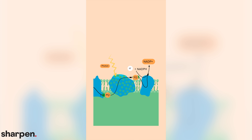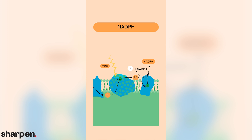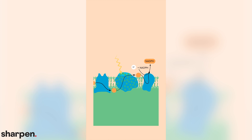This marks the end of the light-dependent reactions. Both ATP and NADPH go on to play crucial roles in carbon fixation. Notice how the electrons that started in H2O leave the chain via NADPH — because these electrons are not recycled by either photosystem, this production of ATP and NADPH is called non-cyclic photophosphorylation.